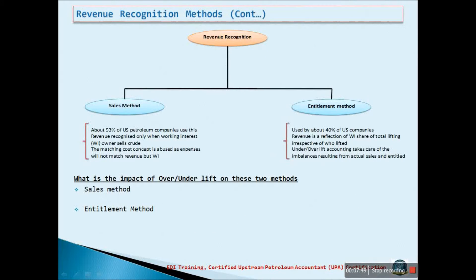About 53% of U.S. oil companies use the sales method, while about 40% make use of the entitlement method. Under the sales method, revenue is recognized only when the working interest owner sells its share of oil. In this case, the matching cost concept is affected as expenses will not match revenue for the working interest. In the entitlement method, revenue is a reflection of working interest share of total lifting, irrespective of actual lifting. The under/over-lift accounting takes care of the imbalance resulting from actual sales and the entitled amount.